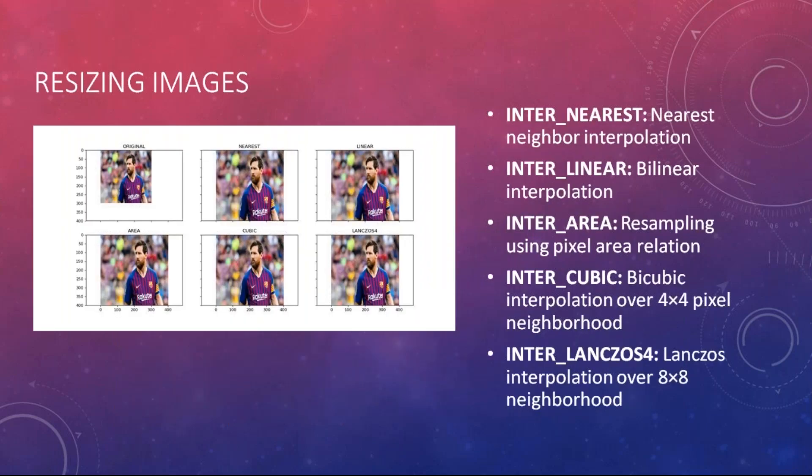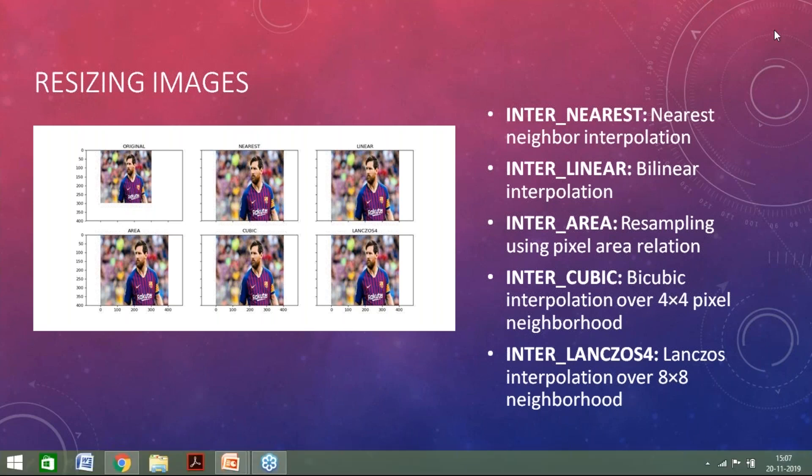The next thing we can do with images is resizing. One of the hard tasks in computer vision models is that images don't come in a uniform size. We need functions that help us resize images to the particular format we need. Usually, we extract the minimum and maximum height and width of all images and resize them to a uniform size so they can be used to build a model. OpenCV provides functions like inter-nearest, inter-linear, inter-area, and inter-cubic for this purpose.